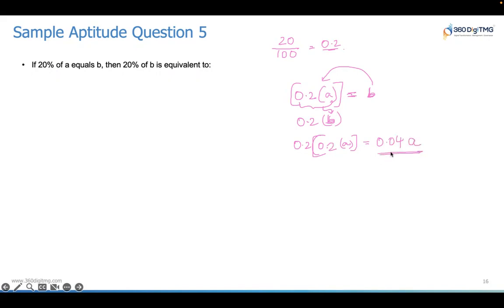0.2 into 0.2 will be 0.04 into A. This will be the answer. And this is if you want to represent 0.04 in percentage terms, multiply it with 100. If you multiply 0.04 by 100, you get 4. So 4% of A. This is how you need to answer this question.